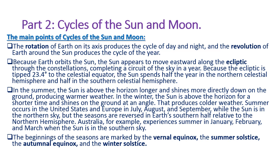The rotation of Earth on its axis produces a cycle of day and night, and the revolution of Earth around the sun produces a cycle of the year. Because Earth orbits the sun, the sun appears to move eastward along the ecliptic through the constellations, completing a circuit of the sky in a year. Because the ecliptic is tilted 23.4 degrees to the celestial equator, the sun spends half the year in the northern celestial hemisphere and half in the southern celestial hemisphere.